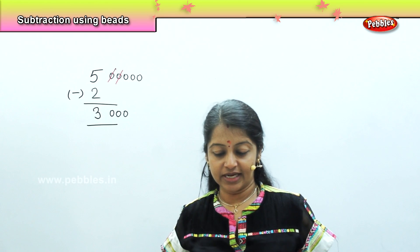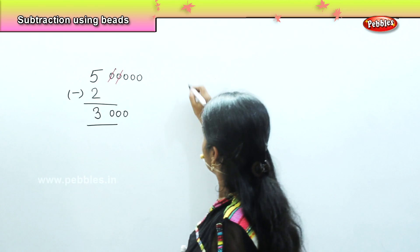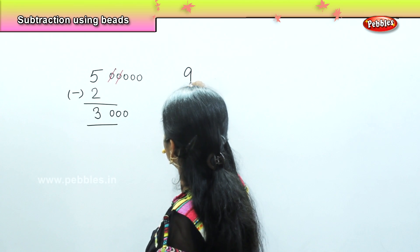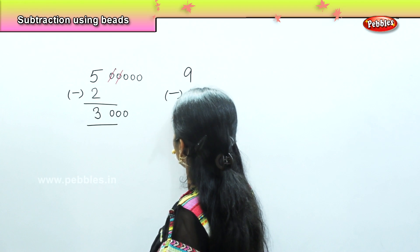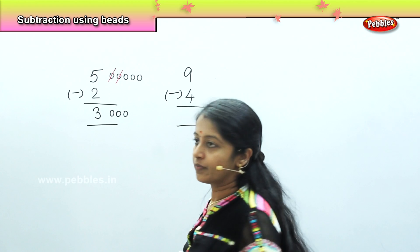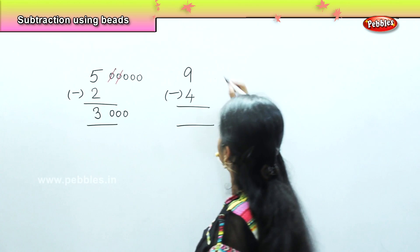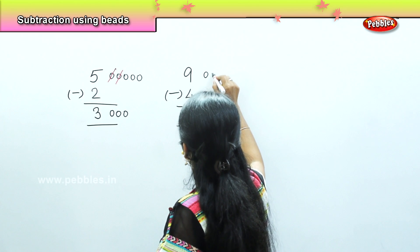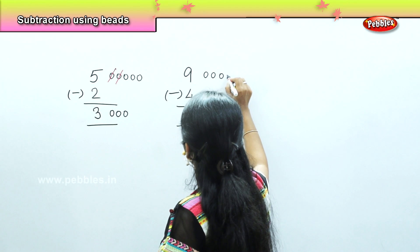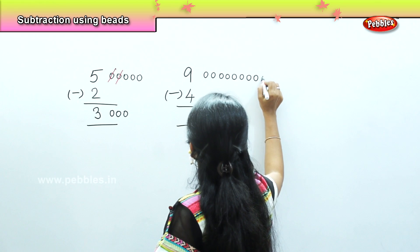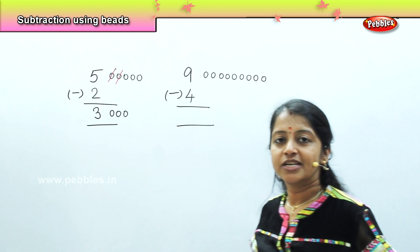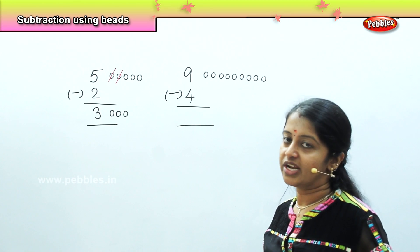Shall we see with the next example? Now the next one is 9 minus 4. What is the first step? We need to draw 9 beads: 1, 2, 3, 4, 5, 6, 7, 8, 9. How many beads do we have to cut from it or strike out?